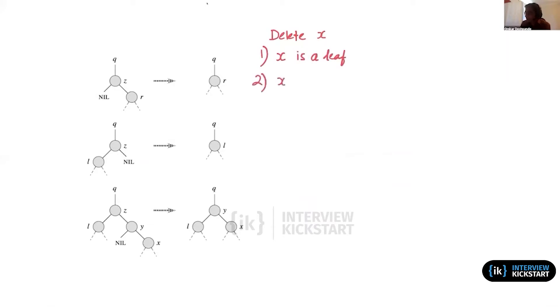Case two was where x is an internal node, which means it has children. A simpler case is when it has only one child. In this diagram here on the left, I've picked these figures from Cormen's Algorithms book. Let's say we are trying to delete z, and we followed a path down from the root. Let's say q was the immediate parent of z.